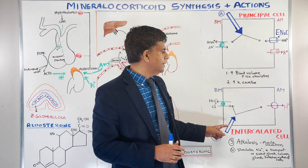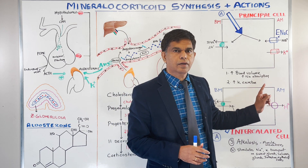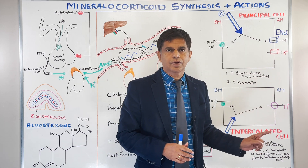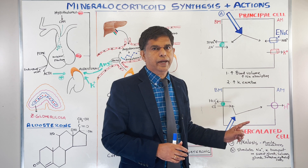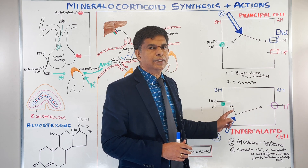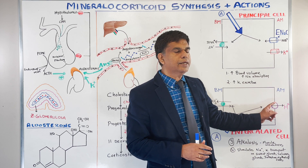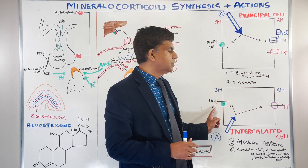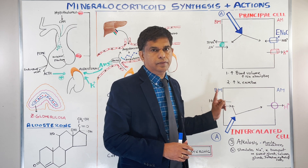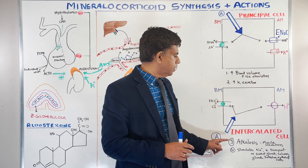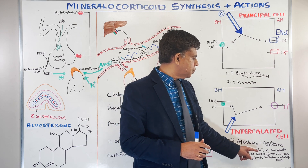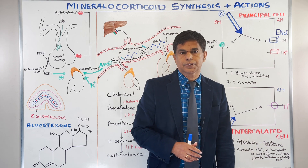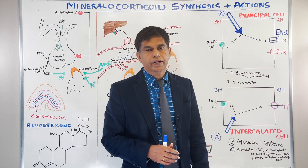In the intercalated cells of the collecting duct, acidification of the urine occurs — hydrogen ions are excreted with the help of an HCO3-chloride pump, which creates alkalinization of the blood. Aldosterone also stimulates sodium-potassium transport in sweat glands, salivary glands, and intestinal epithelial cells.